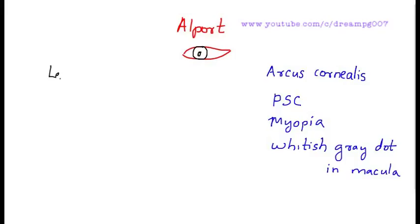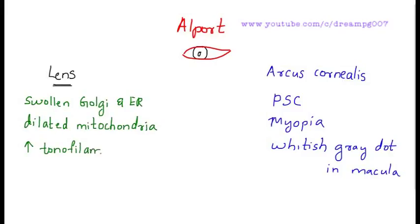Electron microscopic appearance of lens shows swollen Golgi bodies and endoplasmic reticulum, dilated mitochondria, increased tonofilaments, and the absence of epithelial cells under the lens capsule. It can be asked as an MCQ.